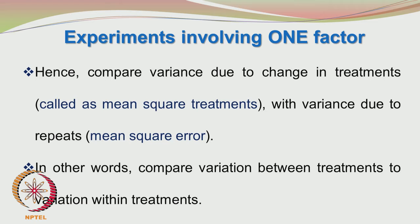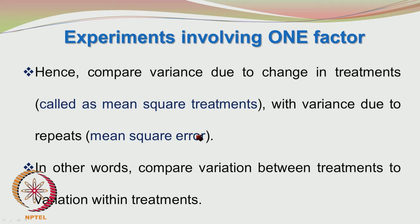We are going to look at variance. Whenever we do repeats of experiments, we look at the mean outcome or mean yield, but it is not only the mean which is important. In addition to mean or average, we also have to look at variance — whatever we studied in the first part of the course is now very relevant. Variance can create an important influence on the interpretation of the data. What we are doing is comparing the variation due to change in treatments with variation due to repeats.